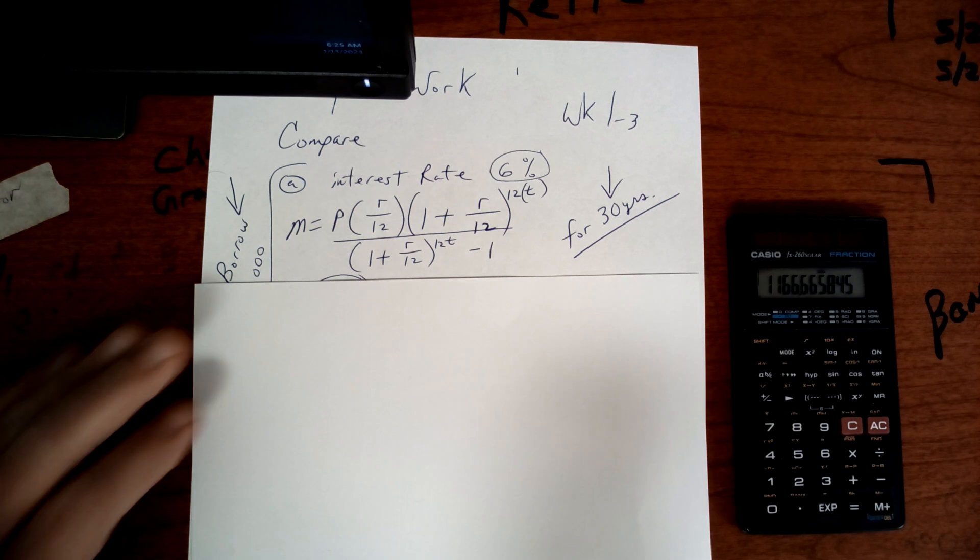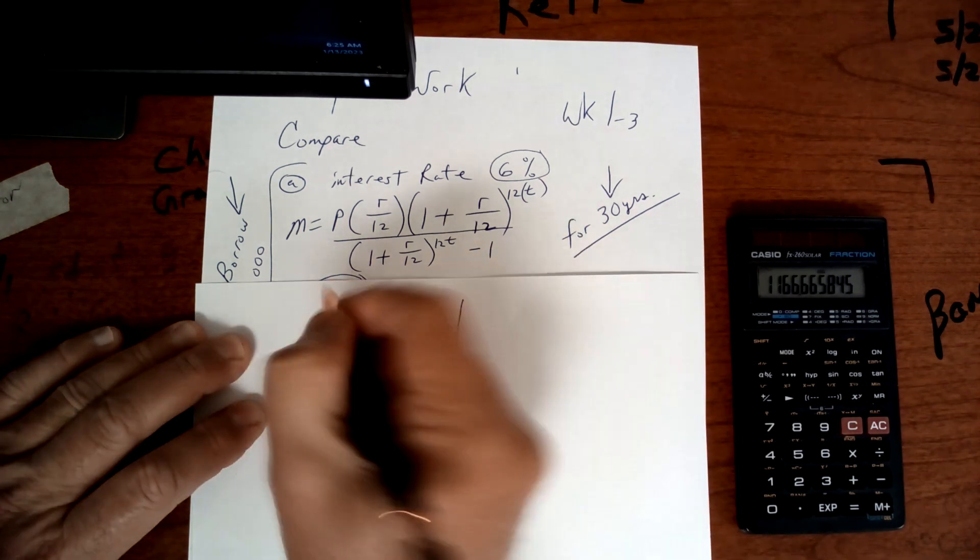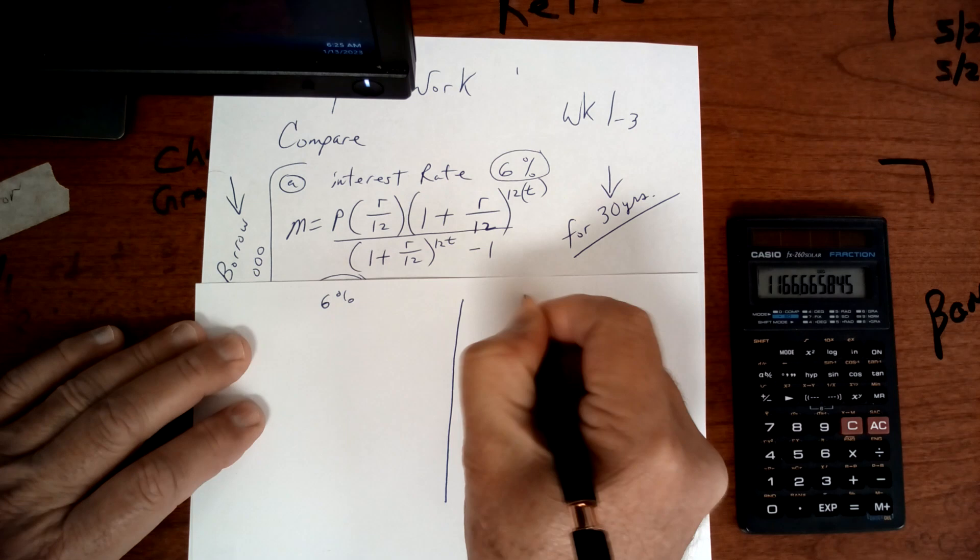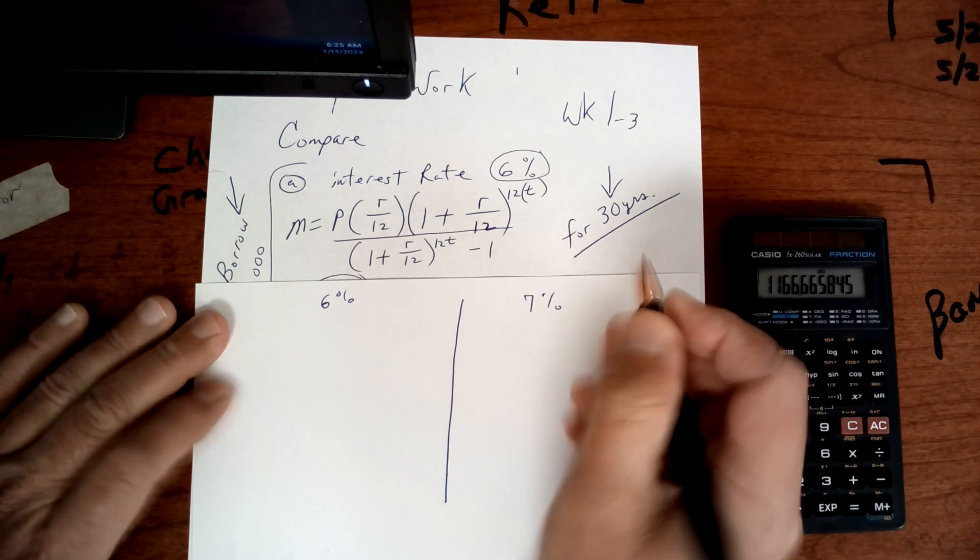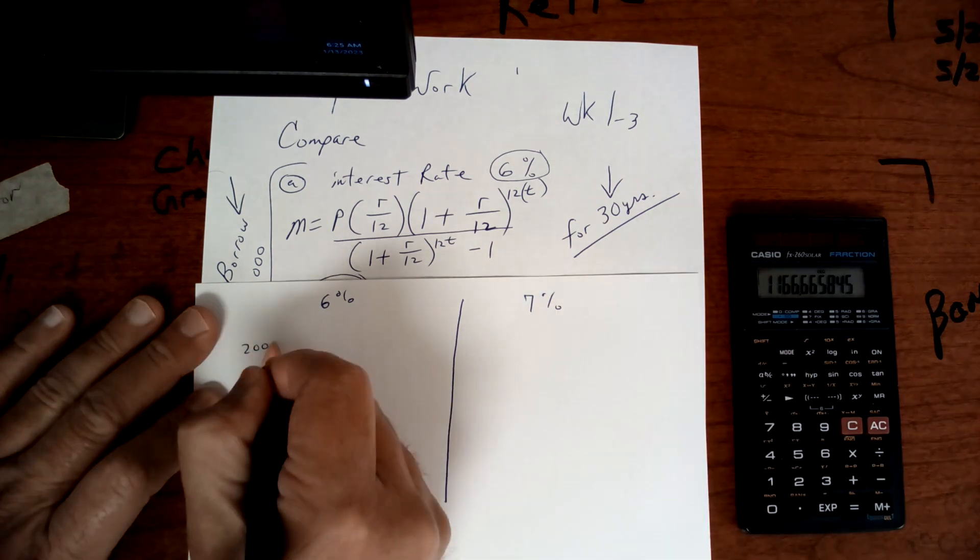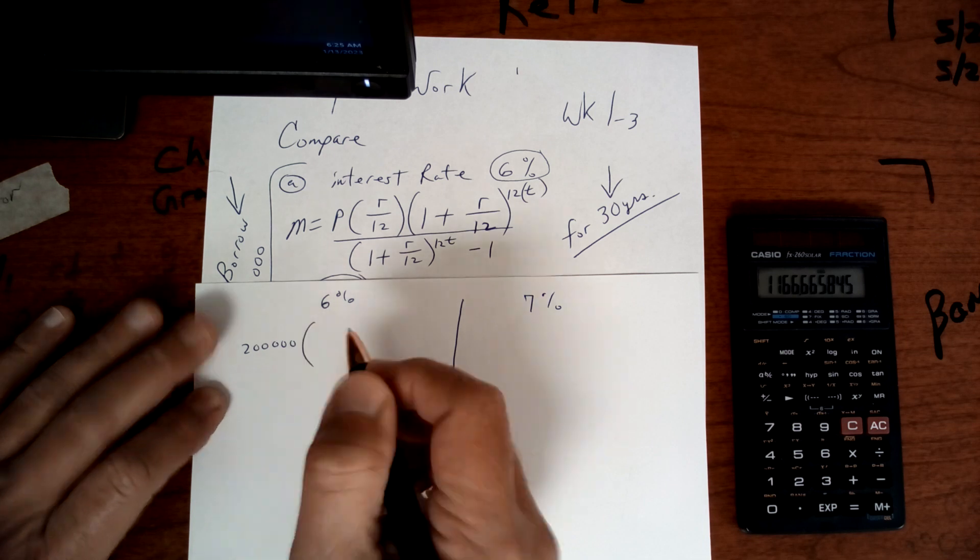I want to compare these two. This one will be 6%, this one will be 7%. So it's going to be 200,000 times .06 divided by